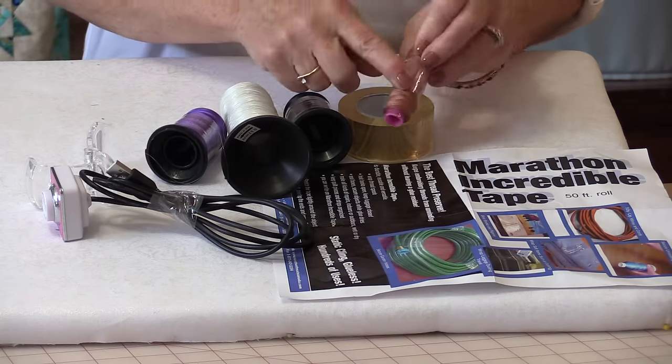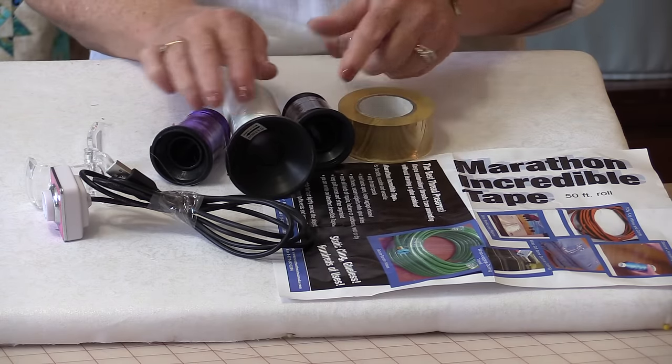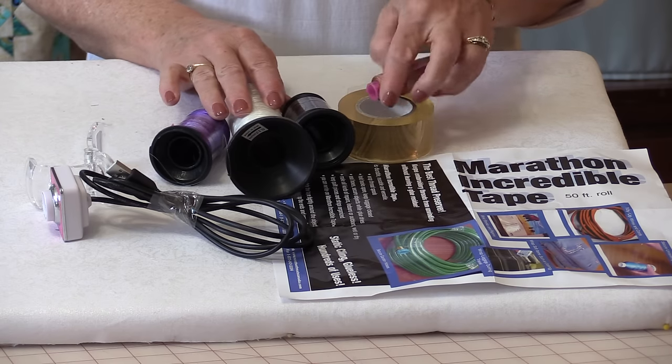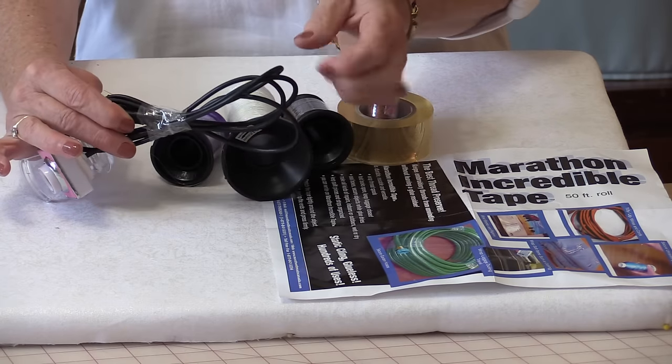Now what I like about the Incredible Tape is it sticks to itself and you can use it to wrap all of your spools of thread so that the thread doesn't get tangled in the drawer, but there's a lot of other uses for it.